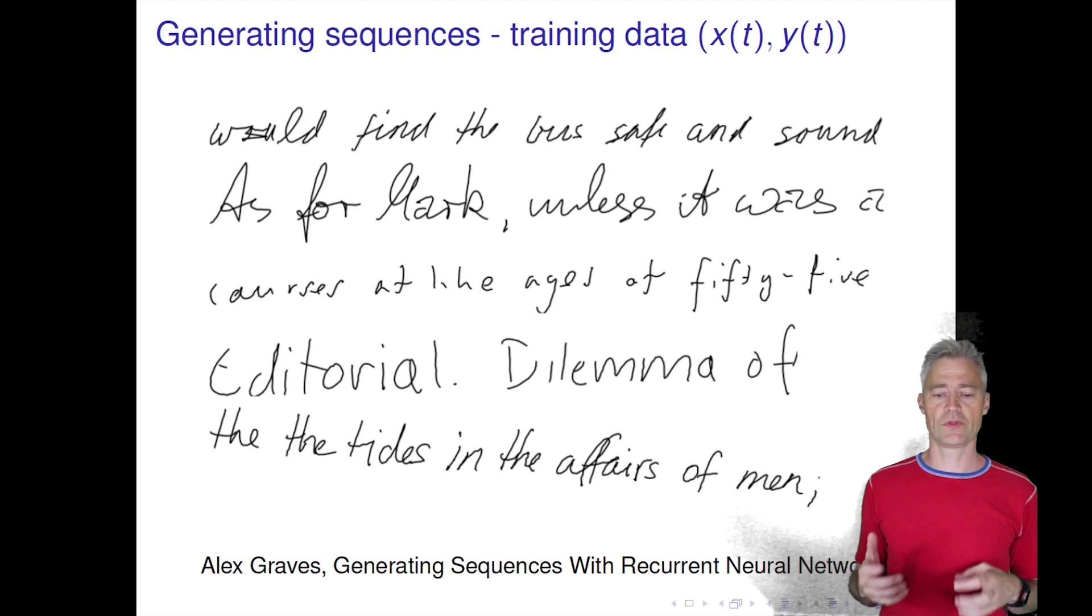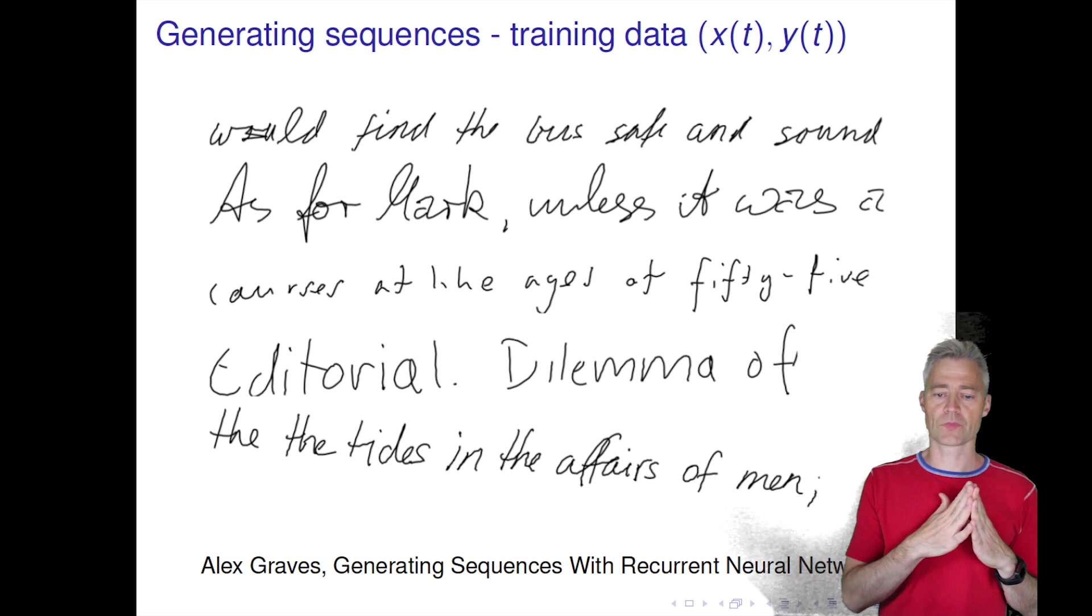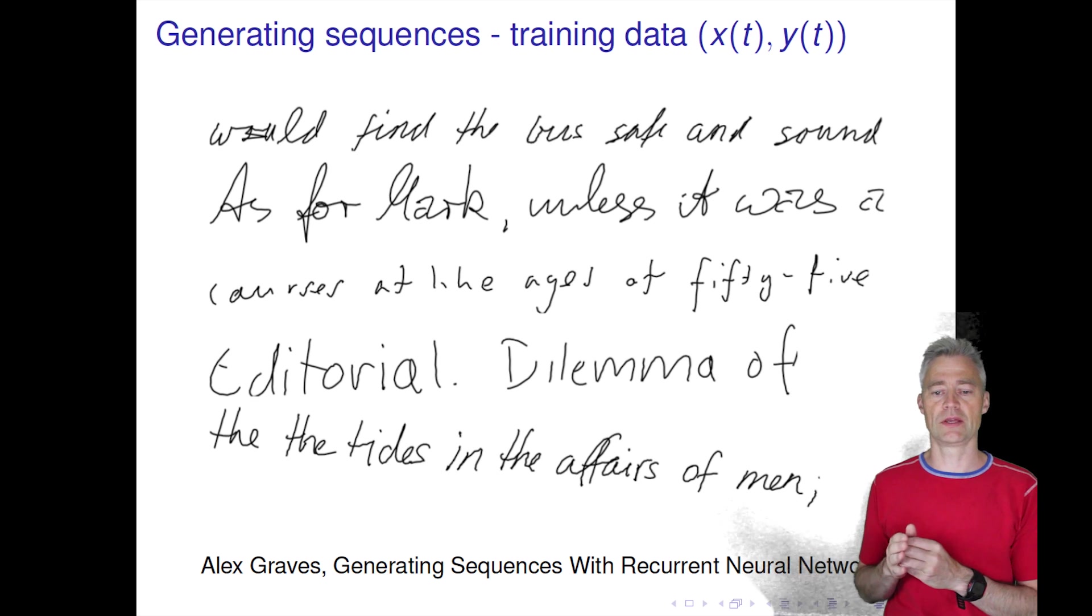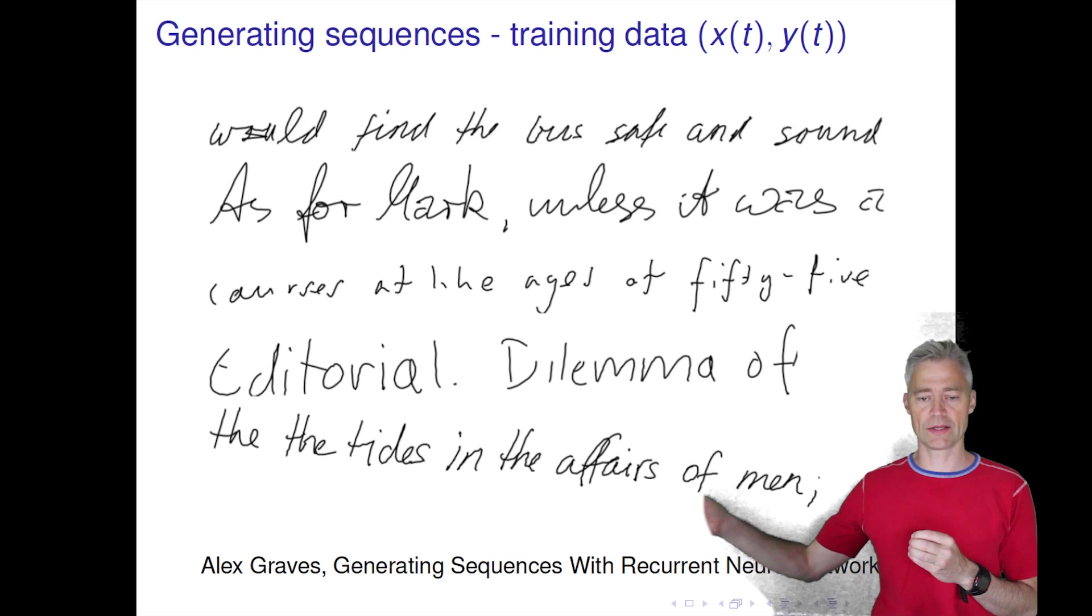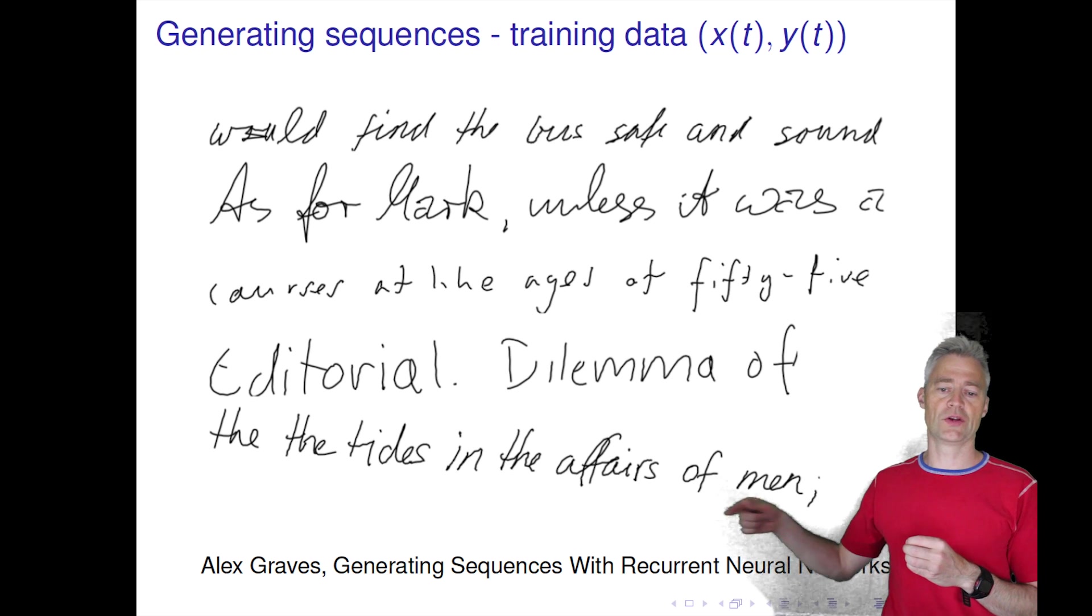In principle, this recurrent neural network has to pick up and represent different types of writing styles. If you give it as an input one specific writing style, then in principle it should continue writing. If you let it work as a generator like we did with the decoder model, then it should be able to generate more text.